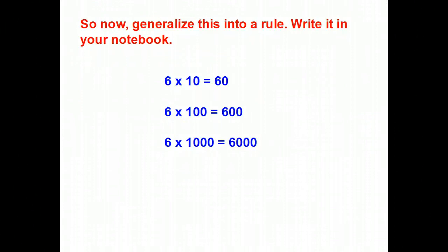So, now I'm going to have you, on your own, generalize this into a rule. Write it in your notebook. You'll need to stop the video in just a second in order to do that. But, take a look at the pattern. 6 times 10 is 60. 6 tens is 60. 6 times 100 is 600. 6 hundreds. 6 times 1,000 is 6,000, or 6 thousands. Make up a rule for what's going on. And you're going to drop that into your notebook, and we'll pick up with that tomorrow.